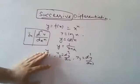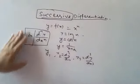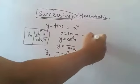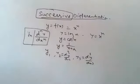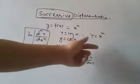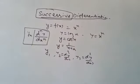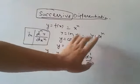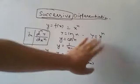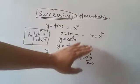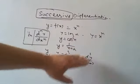The question is: when y is equal to x to the power n, we will find the nth derivative. We already have y1, y2, y3, and continuing through third order, fourth order, fifth order, sixth order, and so on up to the nth derivative.